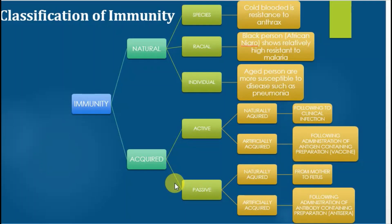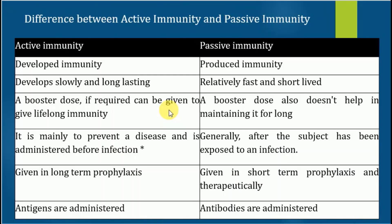In that case, we produce antibodies in other animals, collect them, and supply them to the immunocompromised person for treatment purposes. This is called artificially acquired passive immunity — following administration of an antibody-containing preparation called antiserum. Now the difference between active immunity and passive immunity: active immunity is developed by the immune system itself against the antigen, while passive immunity is produced elsewhere and supplied.